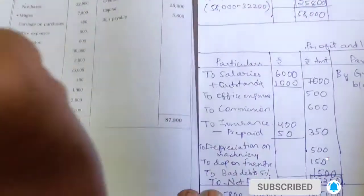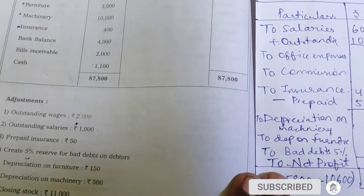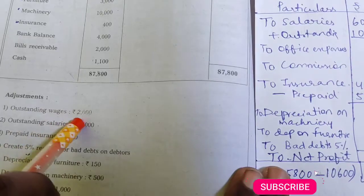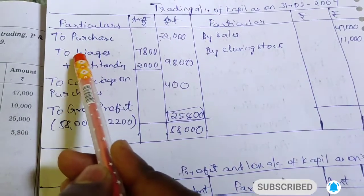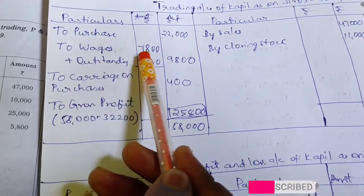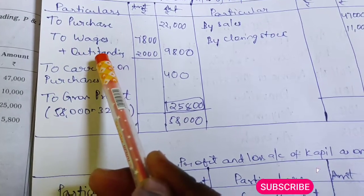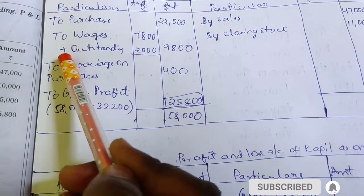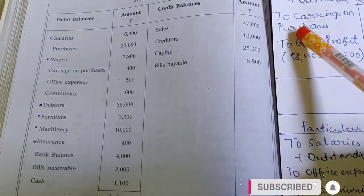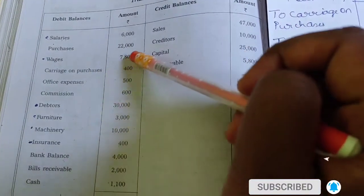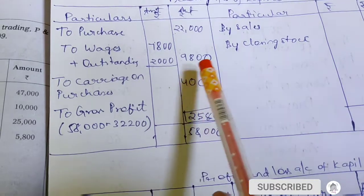Now we have to make adjustments — very important, crucial, line by line. First: outstanding wages 2,000. When we enter, we need to use the inner column. Outstanding is always plus. The original wages amount is $7,800; outstanding wages 2,000 plus = $9,800.